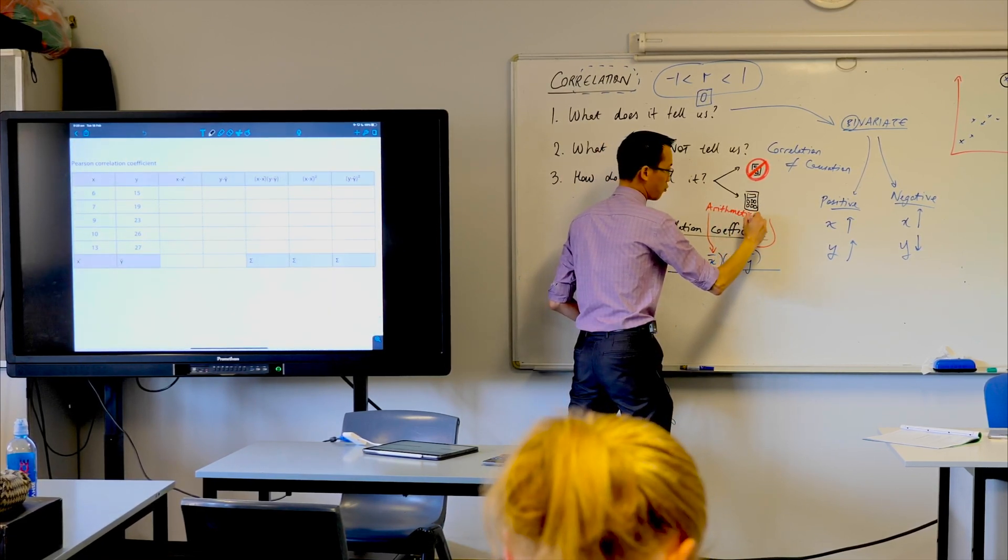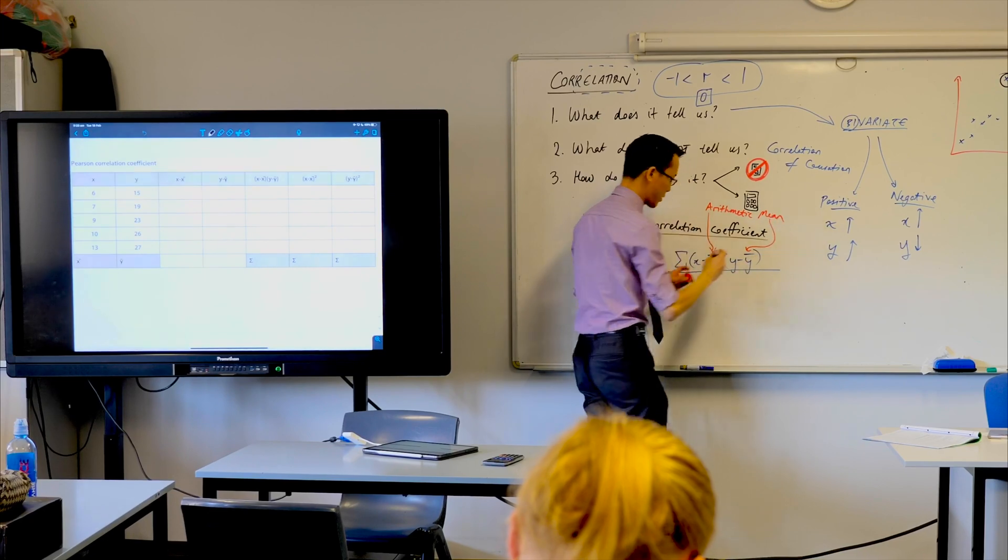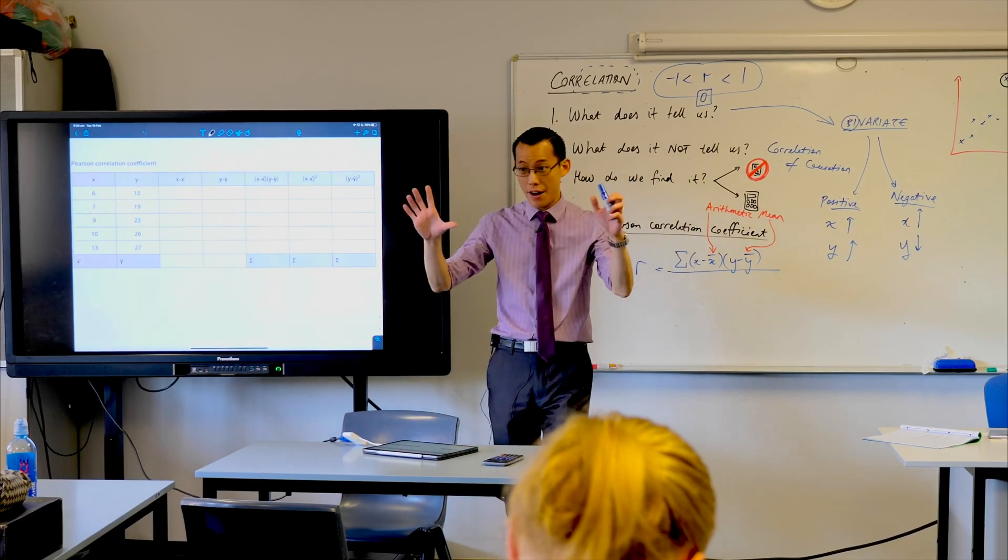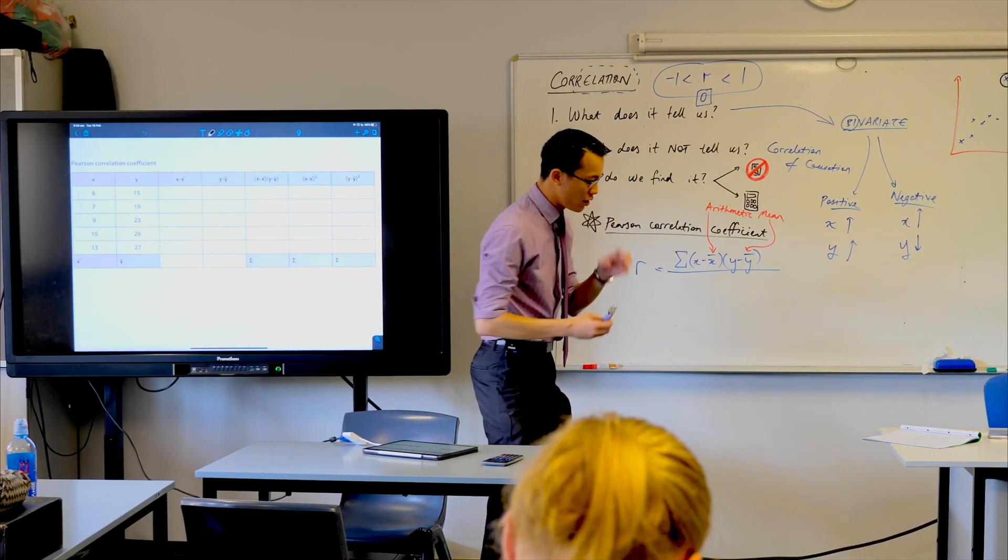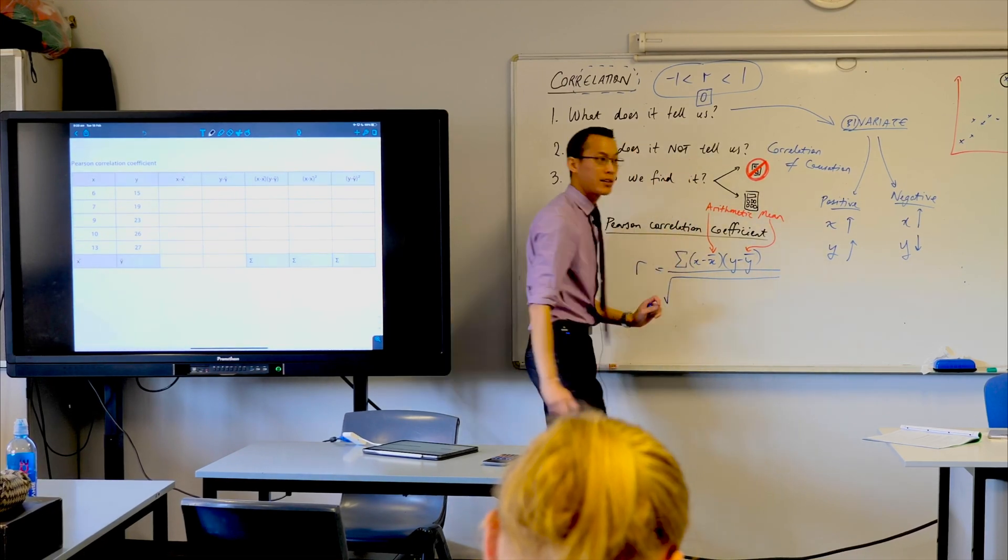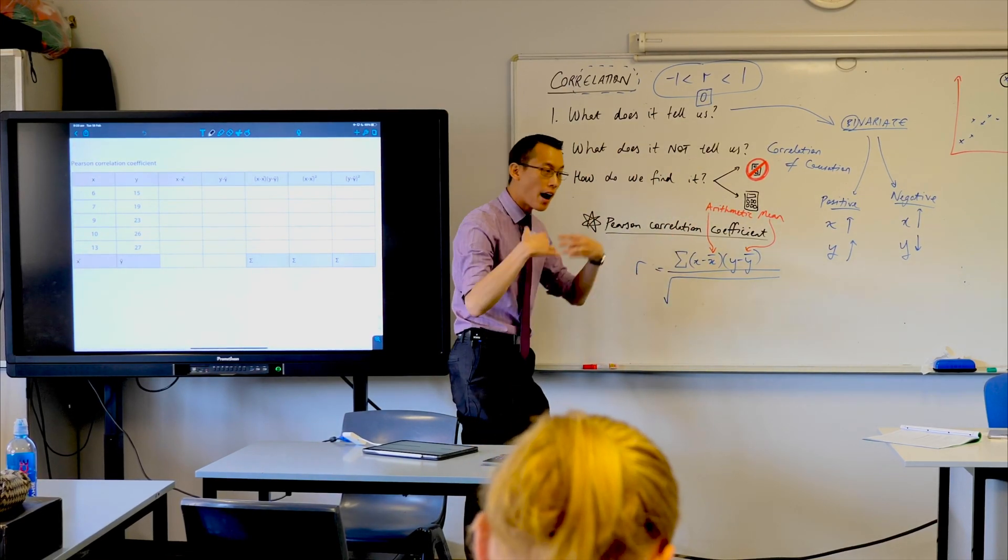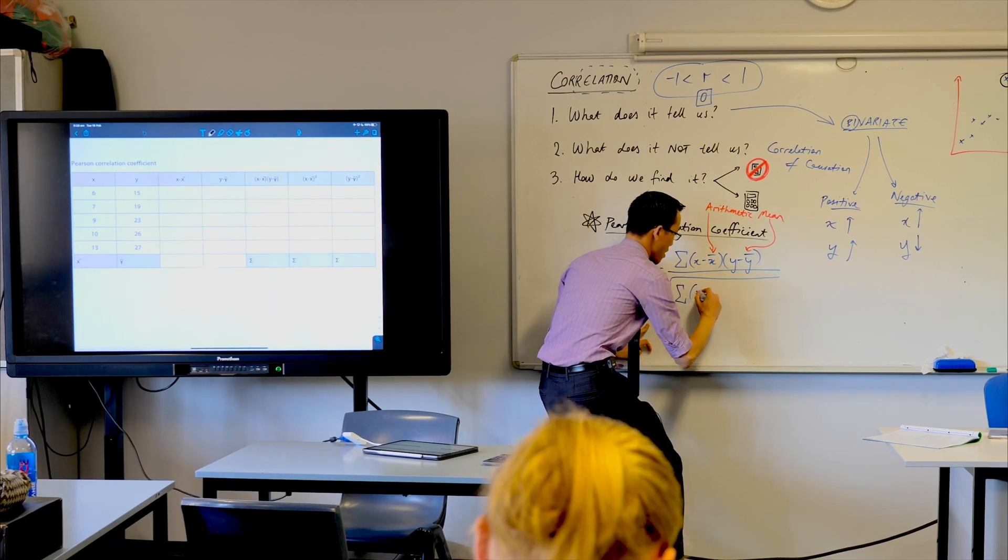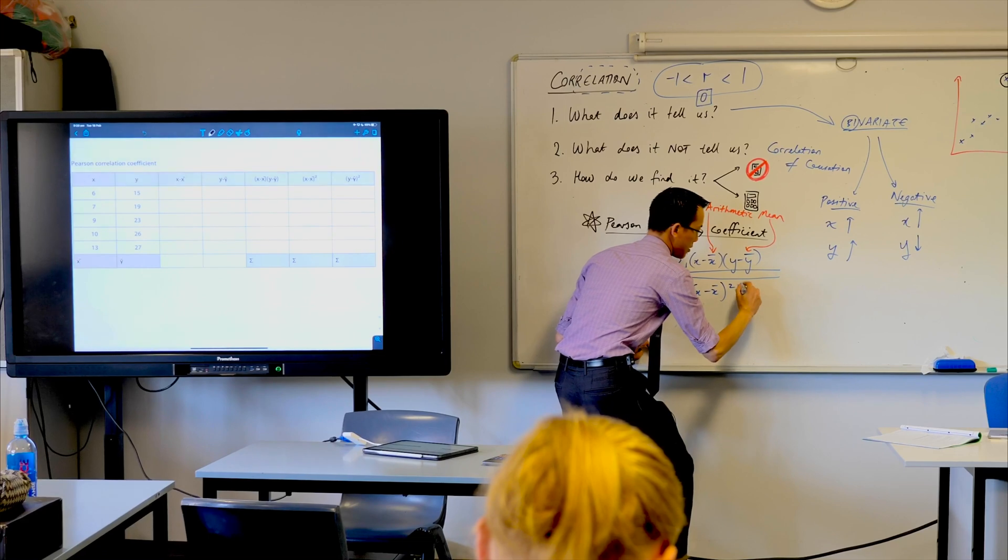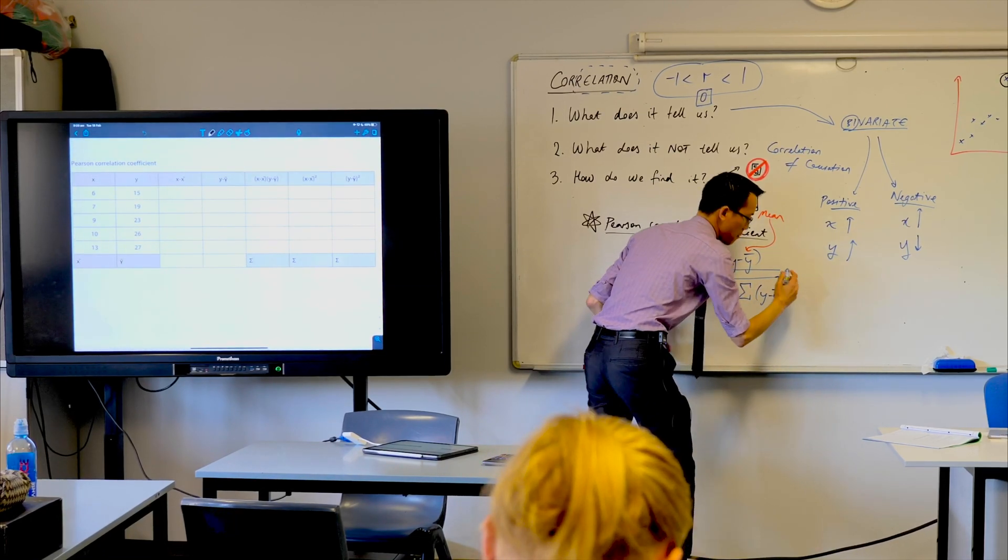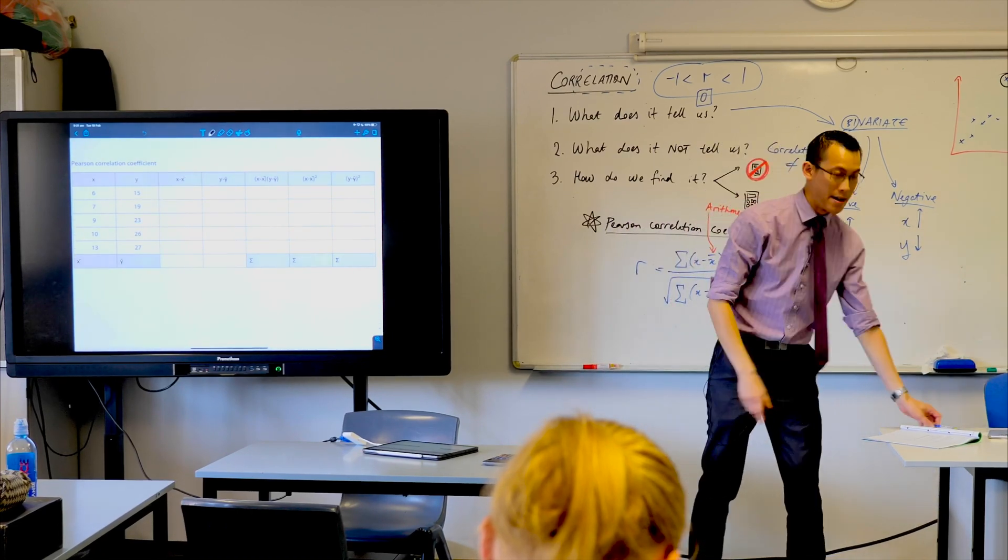That's the numerator. Then you've got the denominator, which is even grosser. It's a gigantic square root sign, and underneath there's a couple more sigmas: x minus x-bar squared, and then another sigma: y minus y-bar squared. What is this mess?